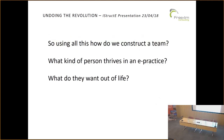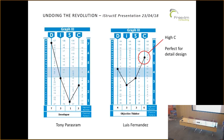Using all this: how do we construct a team? What kind of person thrives in an e-practice? What do they want out of life? And with that, I come to my next participant, Luis, who is probably unmuting as we speak. We know my profile — for me to sit down in the early days of Freeform and do the calc pack, the minutiae checks, the bearing checks, the buckling checks, and all that kind of stuff — you're losing the will to live. That's because my C is so low. And as it happens, Luis is a high C.